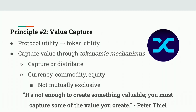The second principle of tokenomics is value capture. The first principle is concerned with value creation — this is value capture. It's the amount of value you're able to accrue to your token and either distribute that out or accrete it to the token and have the token price go up. You do this through the strategic inclusion of tokenomic mechanisms — ways your token is used in the protocol to give it fundamental demand and capture this value. These ways loosely correspond to three asset classes from traditional finance.